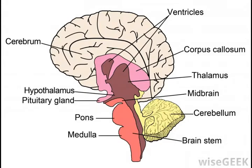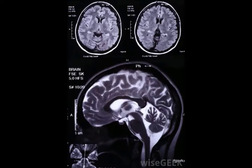Also known as diencephalon, its major function is to relay signals between the nervous system and the gray matter that surrounds it. Composed mostly of bundles of myelinated axons, deep white matter functions as the brain's transmission infrastructure.